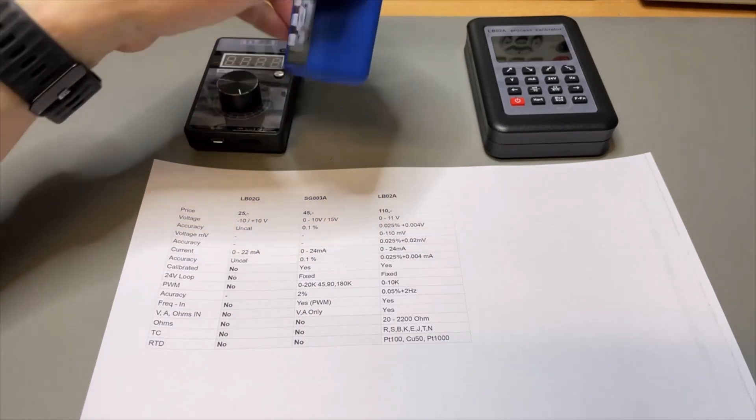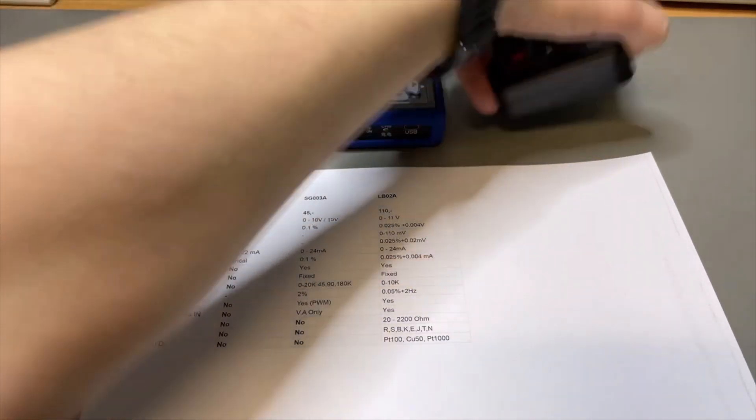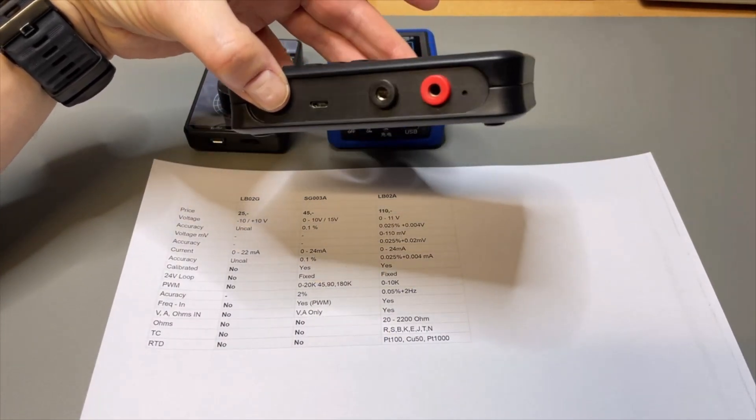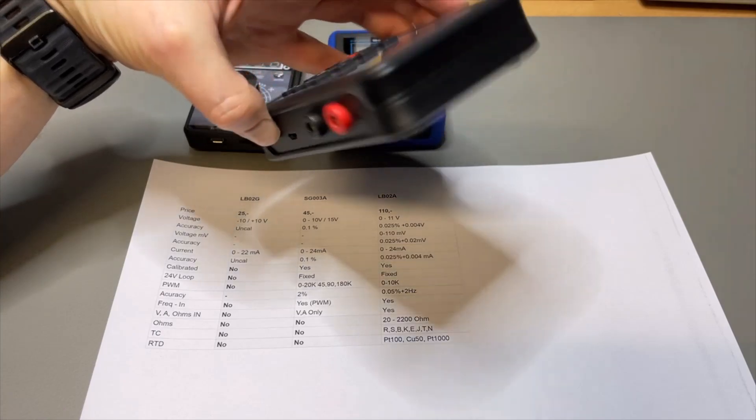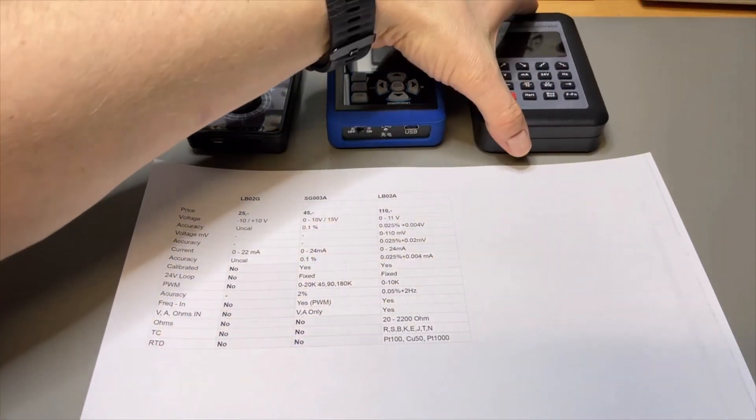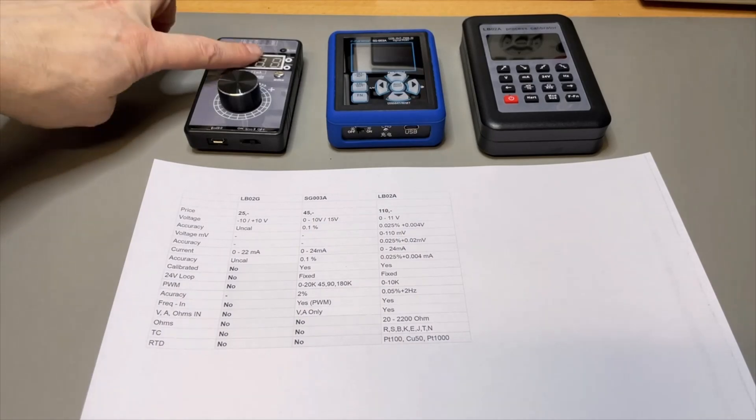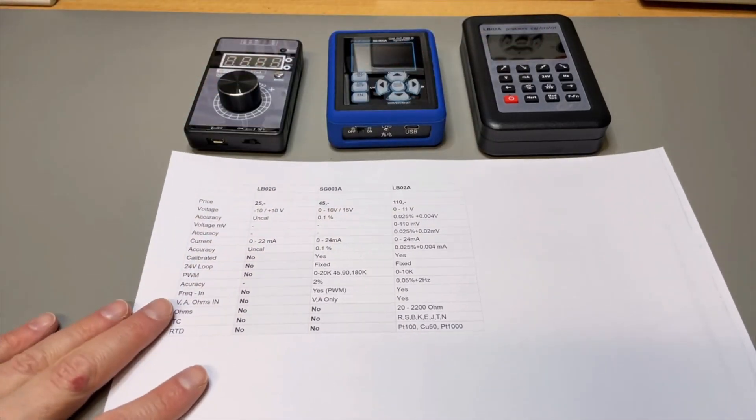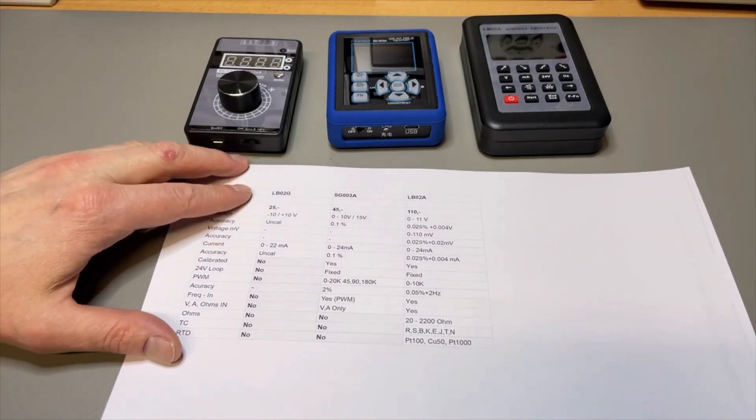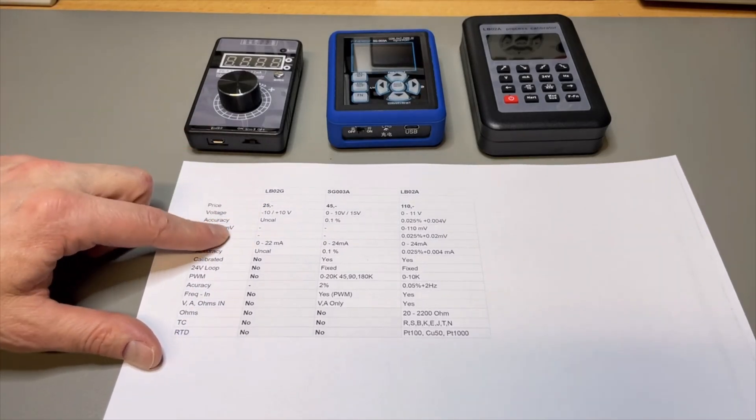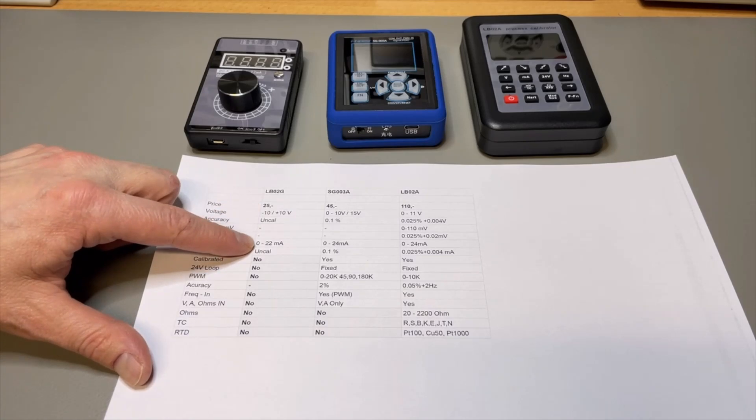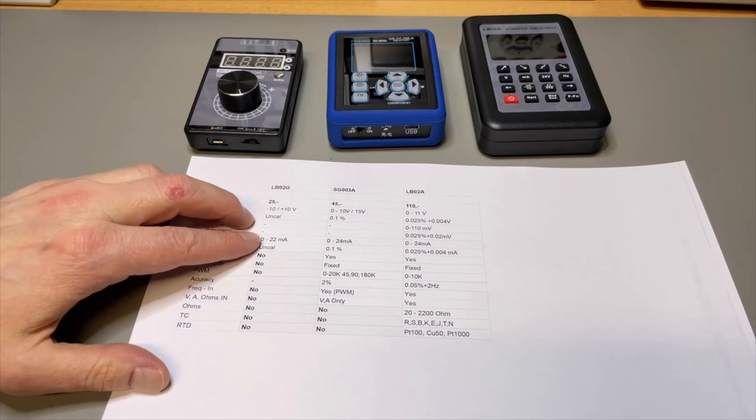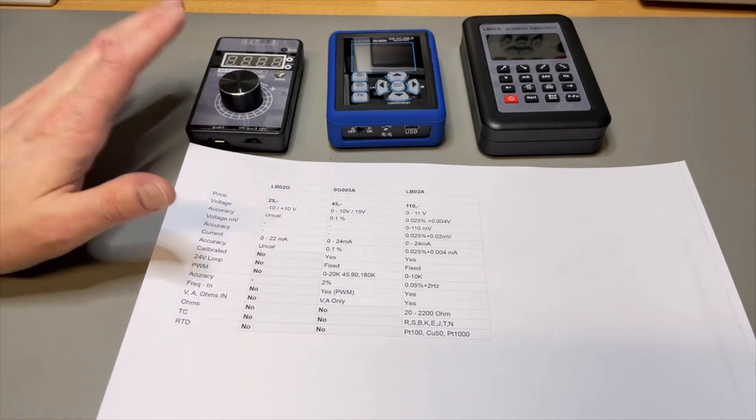This one doesn't have bananas, it has a special plug. Same for this one, it has bananas but they are very small so you need to use its own cables. This one is just very simple, it has only two banana plugs and you can use it for everything. Two decimals, two decimals, three decimals.